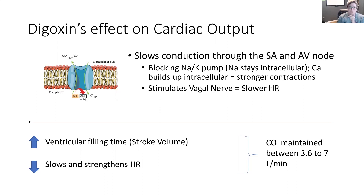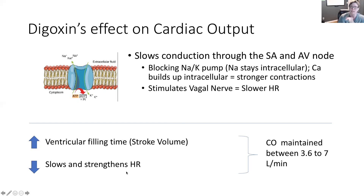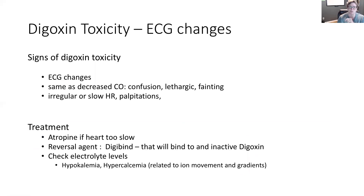So digoxin has an interesting effect on cardiac output: it increases ventricular filling time — known as stroke volume — slows the rate, and increases the strength of the heart contraction. We do want a cardiac output between 3.6 and 7 liters per minute; those numbers may vary depending on your textbook.